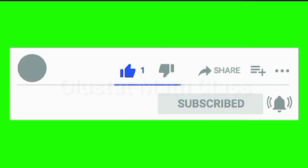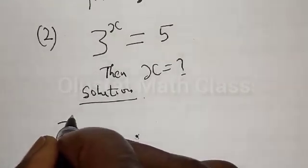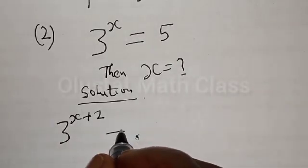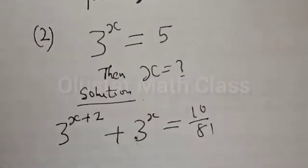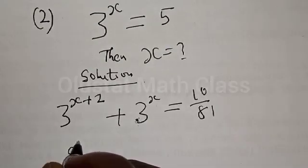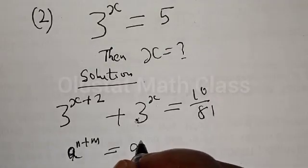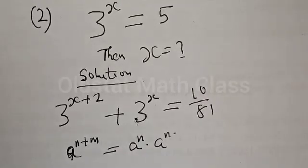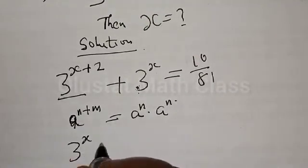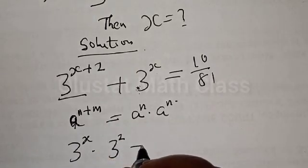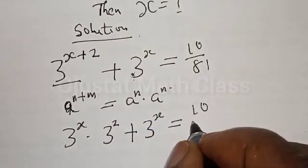Solution. From the first question, we have 3 raised to power x plus 2, plus 3 raised to power x, equal to 10 divided by 81. We know that a raised to power n plus m is the same as a raised to power n multiplied by a raised to power m. Therefore, this can be transformed as 3 raised to power x multiplied by 3 raised to power 2, plus 3 raised to power x, equal to 10 divided by 81.